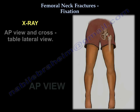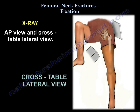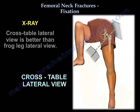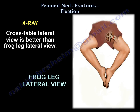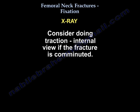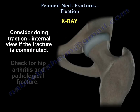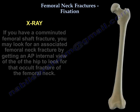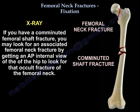X-rays: Obtain an AP view and a cross-table lateral view. In the cross-table lateral, you move the uninjured hip away — the one you move is the normal hip. It is better than the frog-leg lateral. You may consider a traction internal rotation view if the fracture is comminuted, and look for hip arthritis or pathological fracture. If you have a comminuted femoral shaft fracture, also obtain an AP internal rotation view of the hip to look for an associated occult femoral neck fracture.